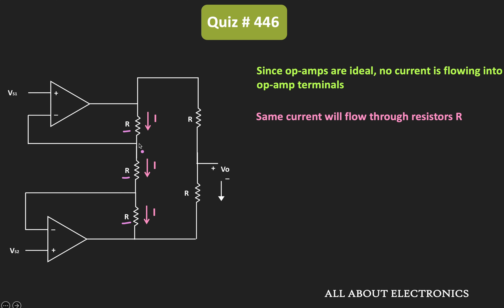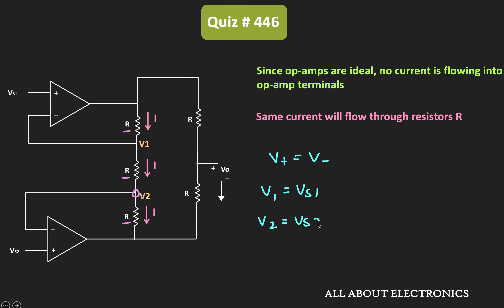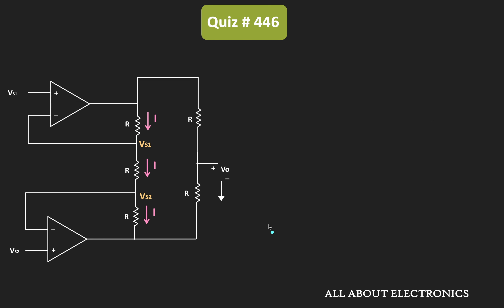Let's say the voltage at this node is equal to V1, while the voltage at this node is equal to V2. Because of the negative feedback in the op-amp circuit, the voltage at the inverting terminal will be the same as the non-inverting terminal. Therefore, V+ is the same as V−. That means V1 is the same as VS1, while V2 is the same as VS2. Let's replace V1 and V2 with VS1 and VS2.